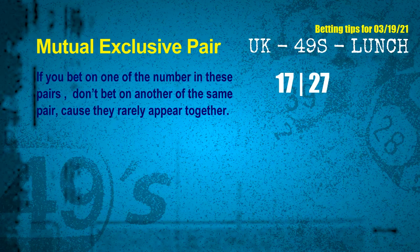One tip is mutual exclusive pairs. These numbers in a pair both match the following ones and colors, but according to thousands of results before, they rarely appear together. This means if you bet on one of them, don't bet on the other in the same pair. The mutual exclusive pair for the next draw is 17 and 27.